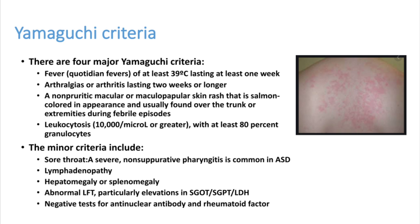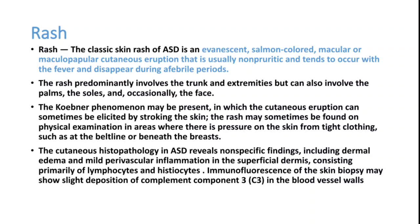Adult Onset Still's Disease patients present with high-degree fever and rashes that disappear once the fever subsides. Patients can also have joint pain and joint inflammation. The rashes are very classical — salmon-colored maculopapular rashes occurring during the febrile period, mainly involving the trunk and extremities. There is also a phenomenon called Koebner's phenomenon, where cutaneous eruptions can be elicited by stroking the skin in that area.